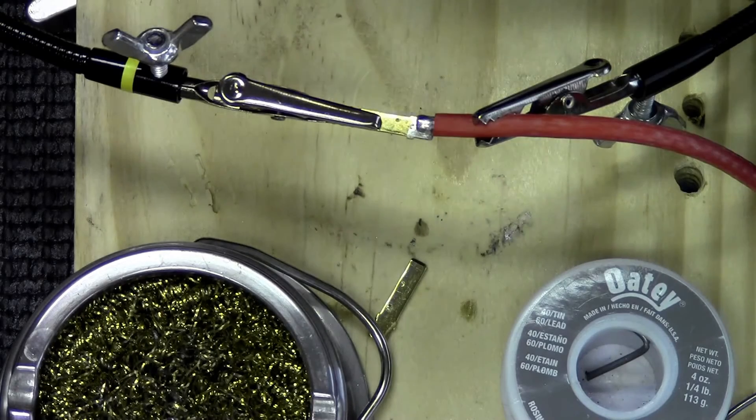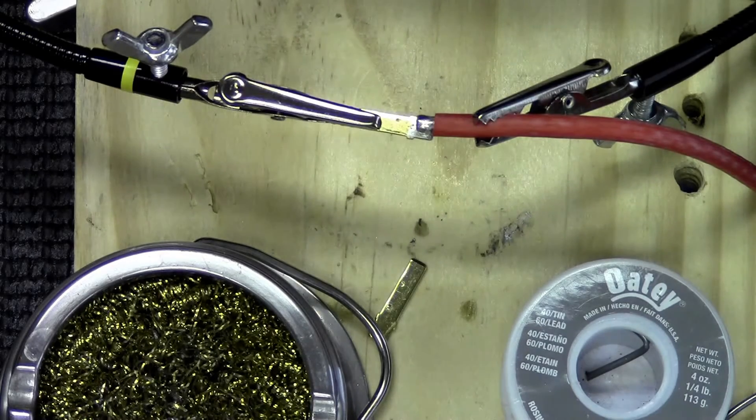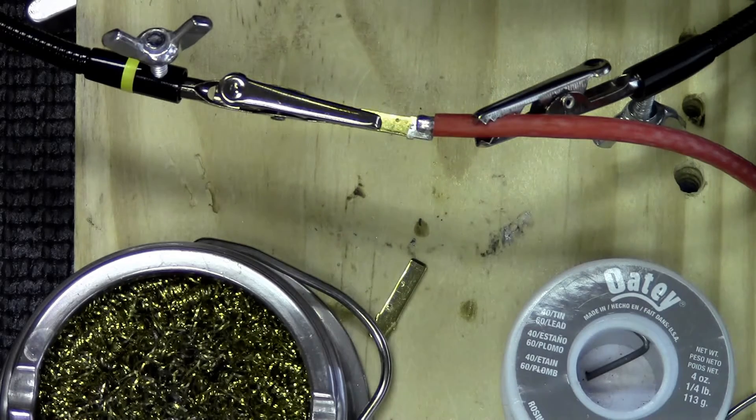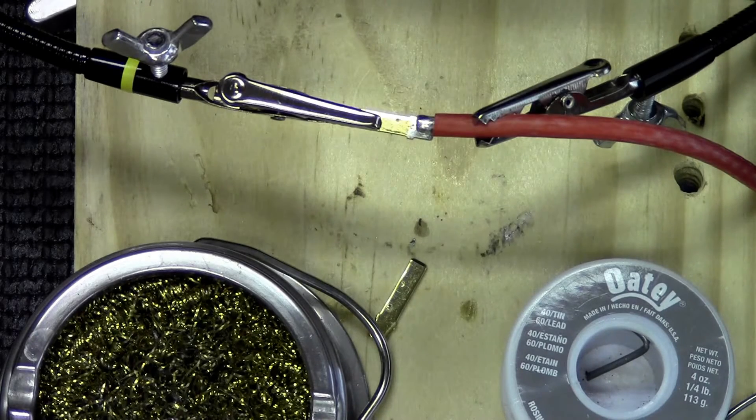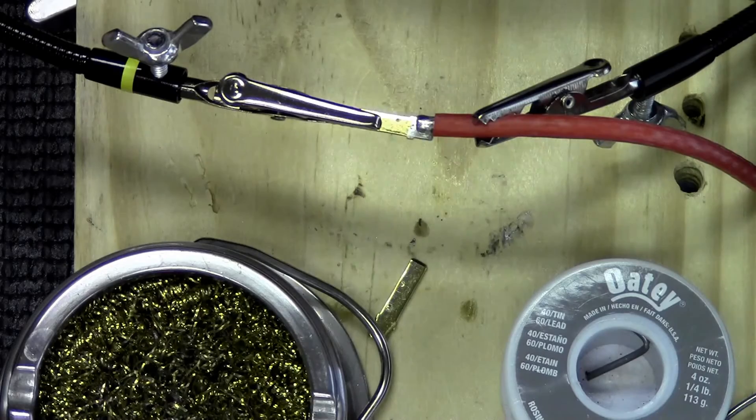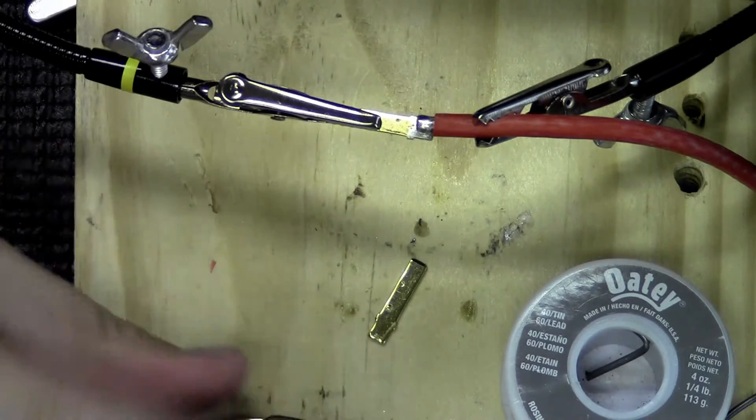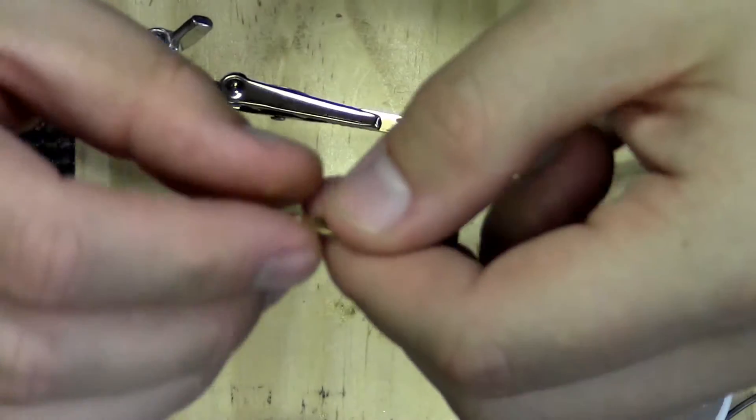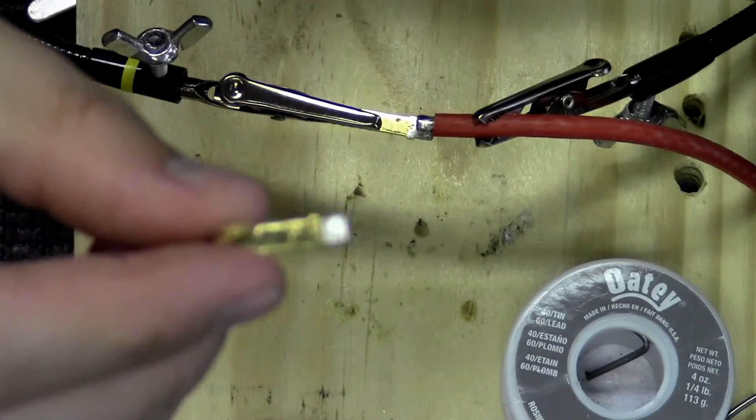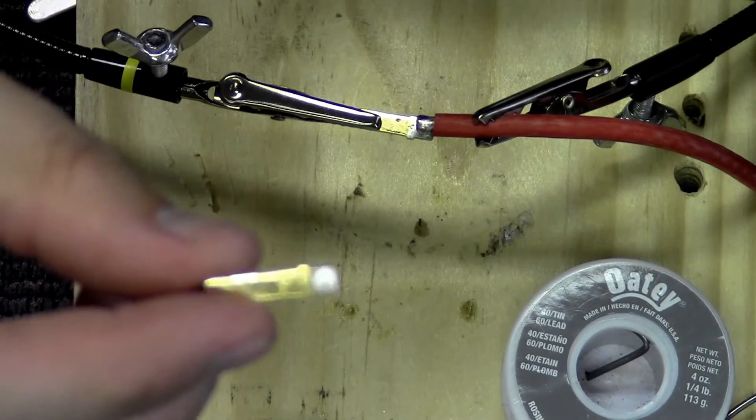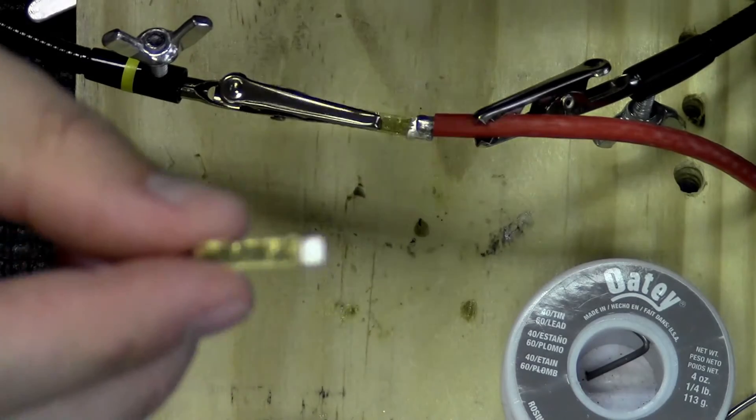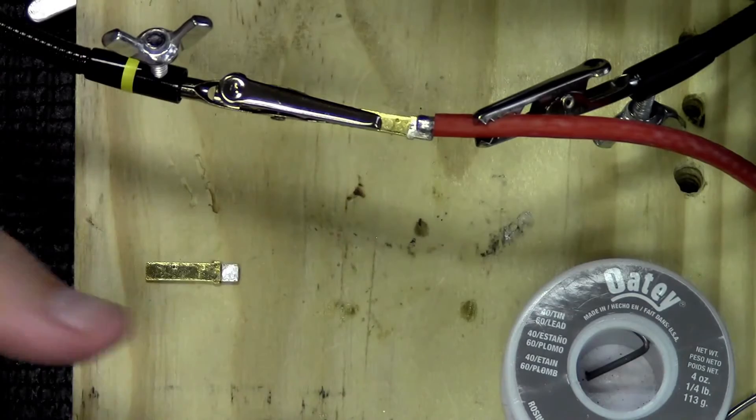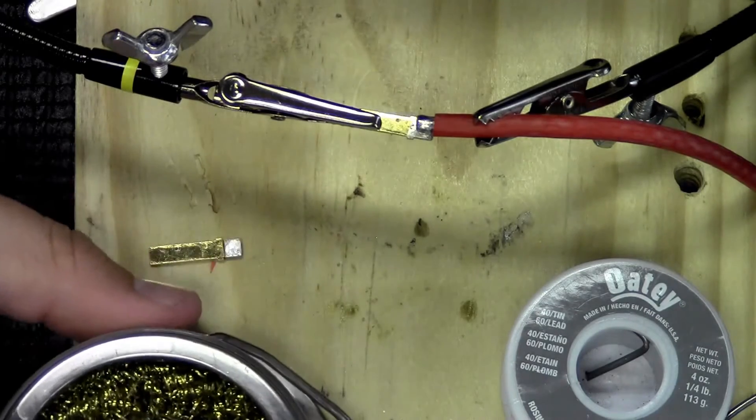Today we're going to walk through how to solder on your battery ends or your ESC ends for your RC. For this particular video we're actually going to be using the Traxxas ends, which you can see here. Here's the actual lead that's going to go into the plug. I've got the other one set to go here.